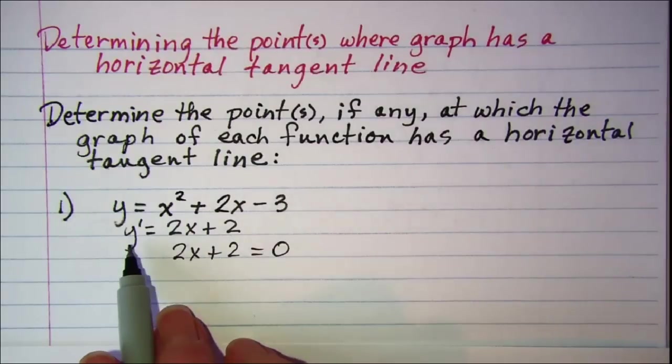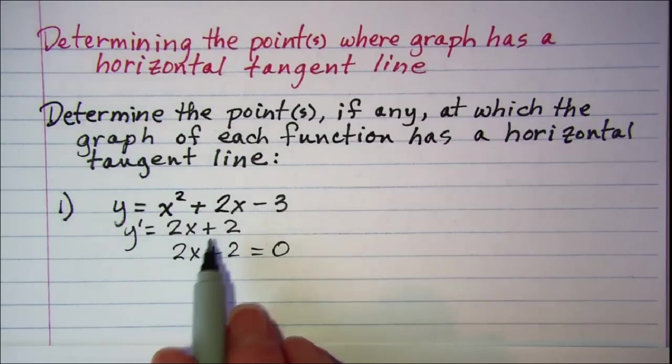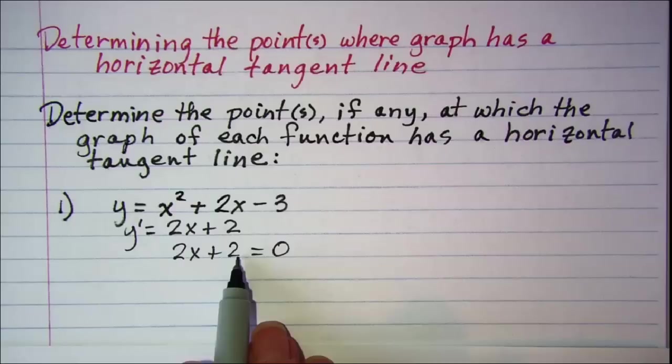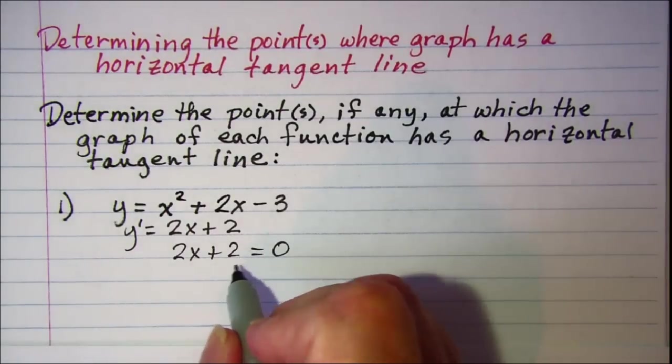So by finding the derivative, we're finding the equation of the slope. And then by setting that equation equal to 0, we're stating that the slope of this line is 0. So let's solve for x.